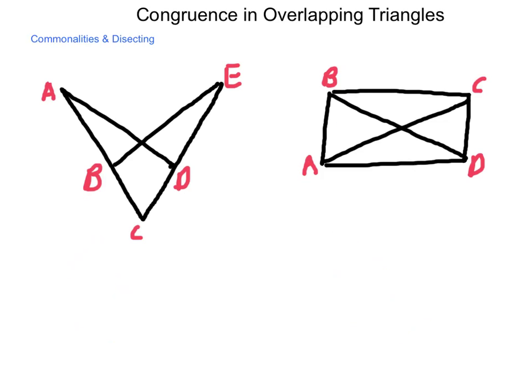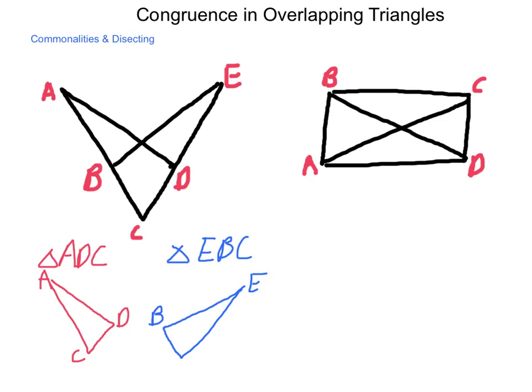In the figure on the left, we have a couple of triangles. And the triangles that we're going to look at are triangle ADC and triangle EBC. So in order to look at these well, we're going to pull them apart. So we have ADC with its labels. And then we have EBC with its parts labeled.